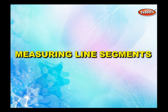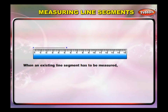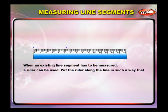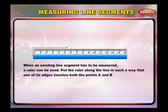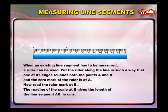Measuring line segments. When an existing line segment has to be measured, a ruler can be used. Put the ruler along the line so that one of its edges touches both the points A and B, and the zero mark of the ruler is at A. Now read the ruler mark at B. The reading of the scale at B gives the length of the line segment AB in centimeters. Here it reads 5 centimeters.